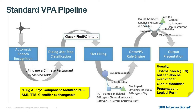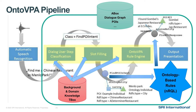The next slide shows that all of these components are part of OntoVPA. The dialog runtime representation happens in the A-box, and the background and domain knowledge — the ontologies — are supplied as T-boxes to the system. The rules then compute the system responses.